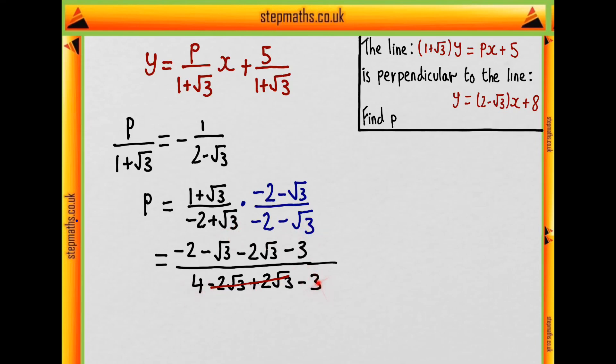But then 4 minus 3 that's 1 so that's awesome. So basically we've just got this numerator and that's minus 5 minus 3 root 3. And that's good because that corresponds with option A in the multiple choice and so our answer is A.